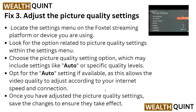Solution 3 is to adjust the picture quality settings. Locate the Settings menu in the Foxtel streaming platform or device you are using, then look for the option to adjust picture quality. Choose a picture quality setting such as 'Auto' or a specific quality level, as you can see in the image. Opting for the Auto setting is recommended as it allows the video quality to adjust according to your internet speed. Once you have adjusted the picture quality settings, save the changes to ensure they take effect.